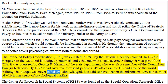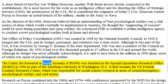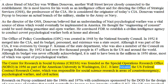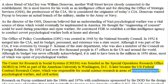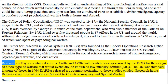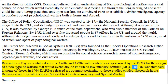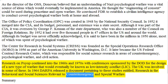Although its budget was never officially acknowledged, it is said to have been in the millions in 1950 alone, most of which was spent on psychological warfare. The Center for Research in Social Systems was founded as the Special Operations Research Office in 1956 as part of American University in Washington, D.C. It later became a United States Federal Contract Research Center, responsible for social science research in areas of counterinsurgency, psychological warfare, and civil action. Research on PSYOP continued into the 1960s with conferences sponsored by the DOD for the design of a new type of warfare that would eventually be known as low-intensity conflict. The UK was involved in some of these. In 1964, DARPA released a document pertaining to these studies entitled Research in the Behavioral and Social Sciences Relevant to Counterinsurgency and Special Warfare.